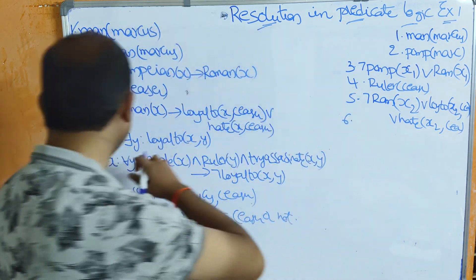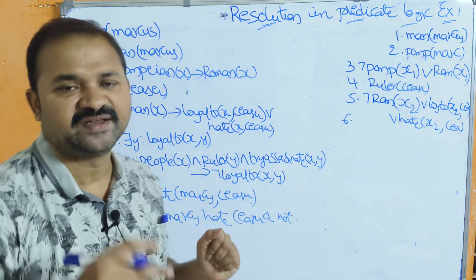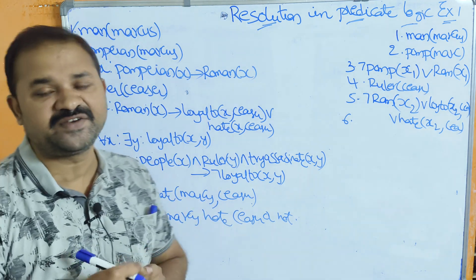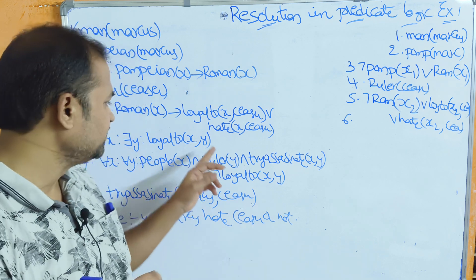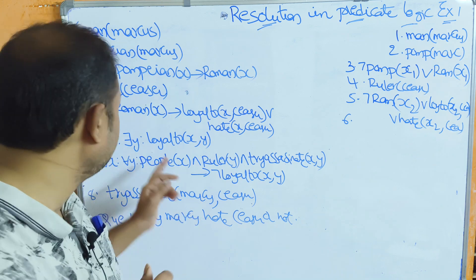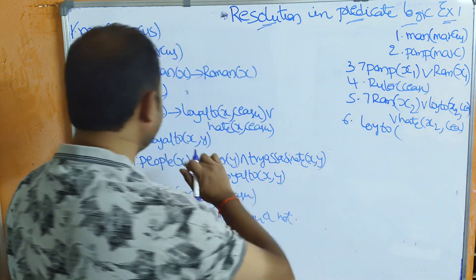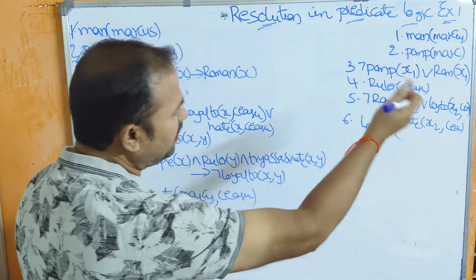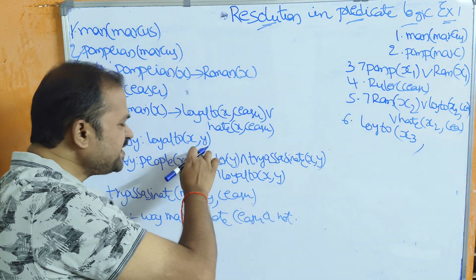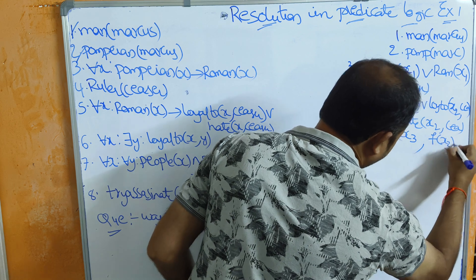The sixth statement has a universal quantifier for x — we remove it directly. But y is an existential quantifier. When we have an existential quantifier, we replace it with a Skolem constant. So y is replaced with f(x3), where x3 is the renamed variable. The clause form becomes loyal_to(x3, f(x3)).